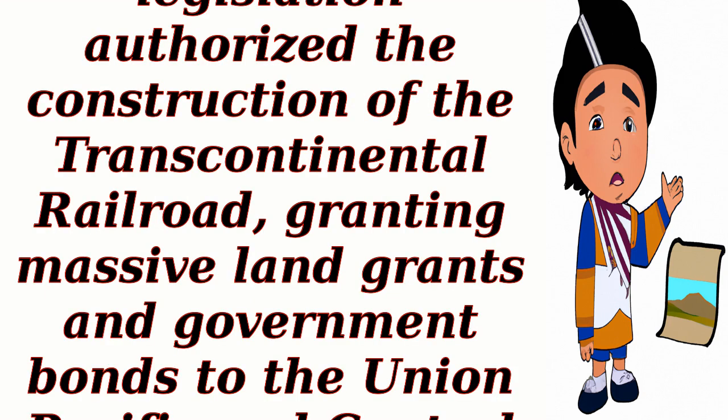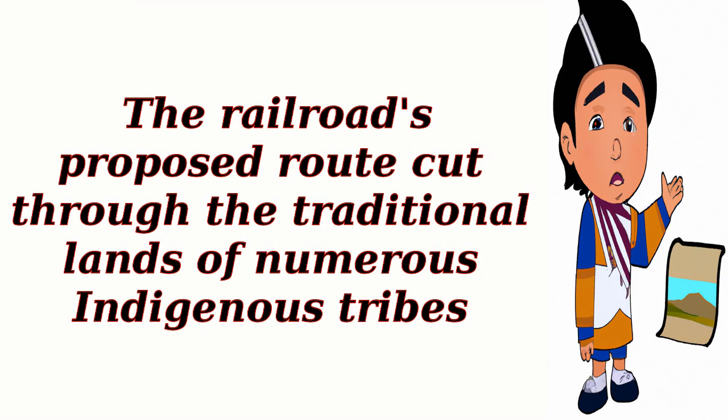Pacific Railroad Act, 1862: This legislation authorized the construction of the Transcontinental Railroad, granting massive land grants and government bonds to the Union Pacific and Central Pacific Railroad companies. The railroad's proposed route cut through the traditional lands of numerous indigenous tribes.